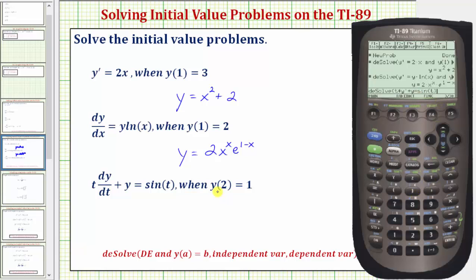Now we enter AND y of 2 equals 1. So catalog. The AND is selected so enter. And then we have y of 2 equals 1 comma the independent variable is now t comma the dependent variable is y. Close parenthesis and enter.